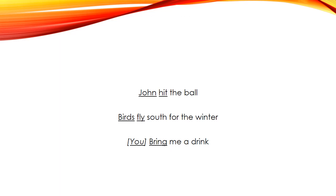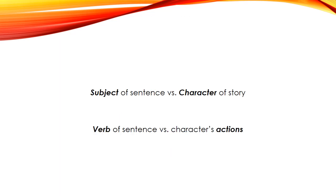In those simple sentences, the subject and the character of the story were the same, and the verb and the character's action were the same. However, these can be different. The grammatical subject might not be the character you're actually intending to talk about, and the grammatical verb might not be the action you're trying to depict. There are many ways to shuffle around characters and actions in a sentence and still produce a grammatically correct sentence — but this often makes things unclear and confusing.